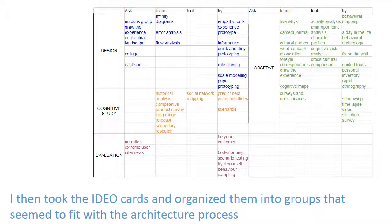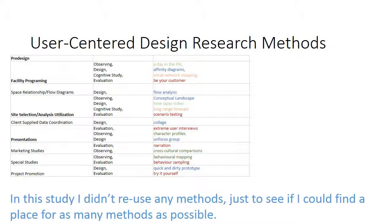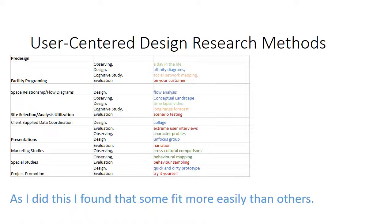I then took the IDEO cards and organized them into groups that seemed to fit within the architectural process, then went through the scope and inserted methods that could fit. In this study I didn't reuse any methods, just to see if I could find a place for as many methods as possible. As I did this, I found that some fit more easily than others.